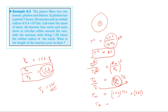The time taken by Mars to complete one rotation around the Sun is approximately 684 days. So the answer to the second part is 684 days. The answer to the first part is 6.48 × 10²³ kg. Thank you.